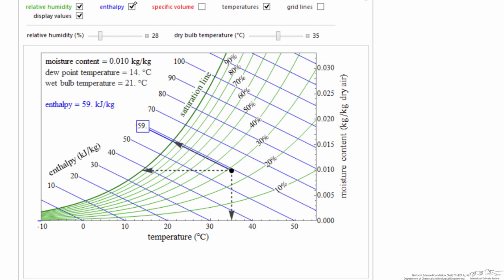So I've added in the enthalpy line, so we can read the enthalpy now, 59 kilojoules per kilogram. This is of course for some reference conditions, which are typically the same for the charts you're going to find in books. So I can read the enthalpy, because everything along this blue line has the same enthalpy.